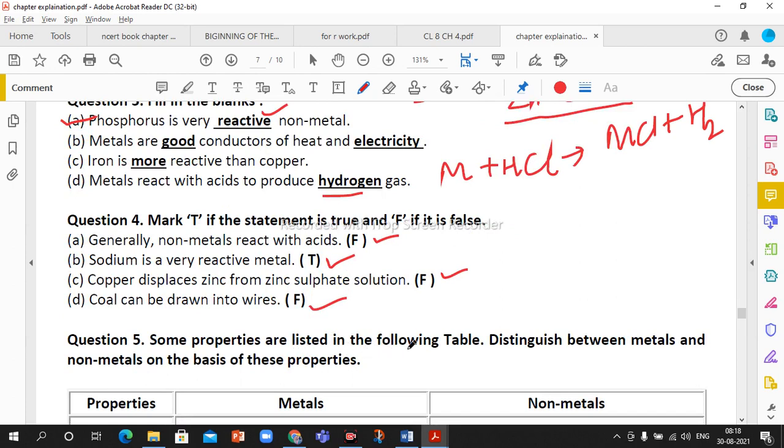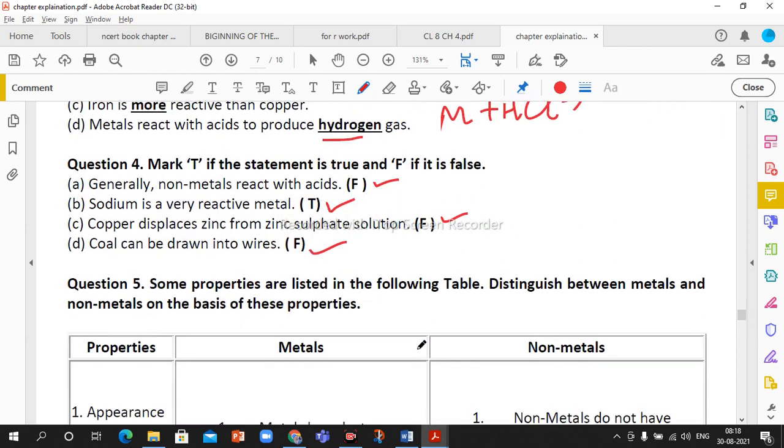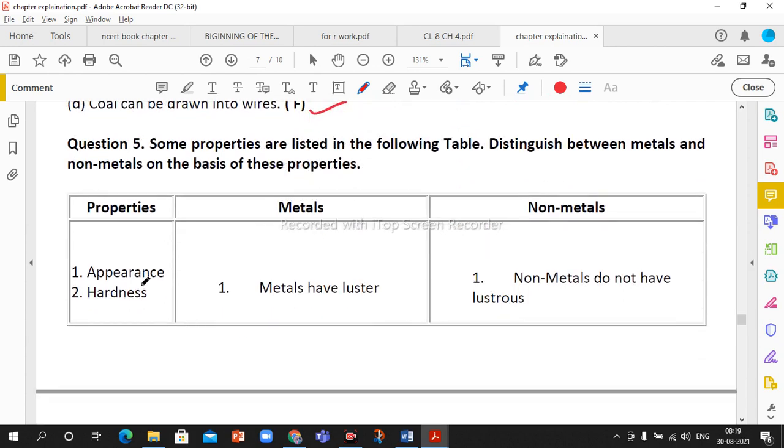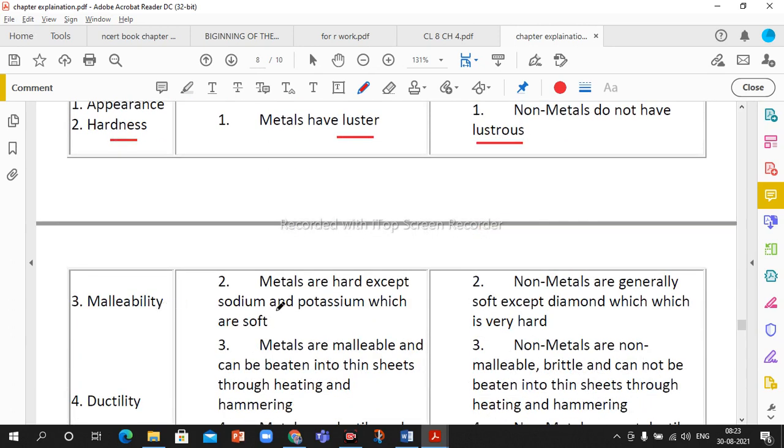Some properties are listed in the following table to distinguish between metal and non-metal. Appearance: metals have generally shiny appearance, we call it lustrous. Metals have lustrous property whereas non-metals do not have shine, they are non-lustrous. Hardness: generally metals are hard. Sodium and potassium are exceptions, very soft, we can cut them with knife.